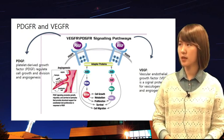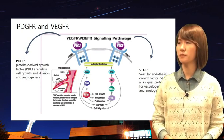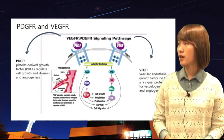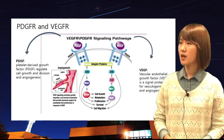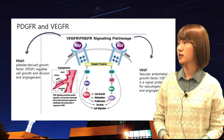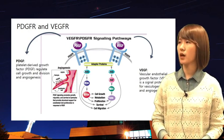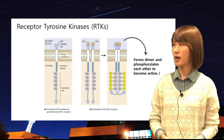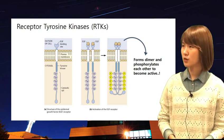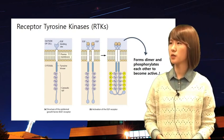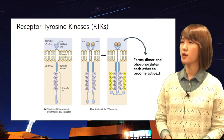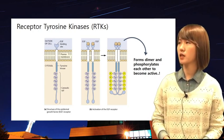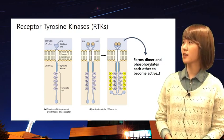PDGFR is a receptor for PDGF, platelet-derived growth factor. They work for cell growth and angiogenesis, and they are both receptor tyrosine kinases. Receptor tyrosine kinase is, by its name, a receptor which phosphorylates tyrosine sites of a protein. Once the signal molecule binds to it, it forms a dimer and they phosphorylate each other and become an active form.